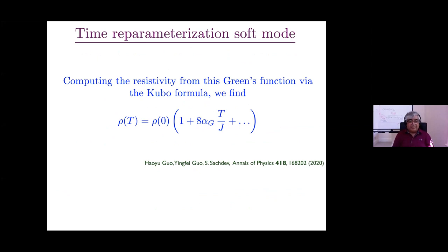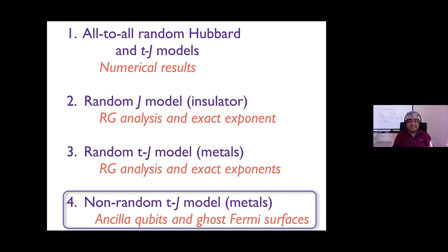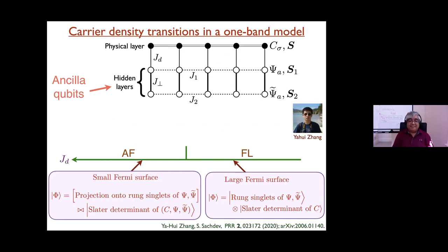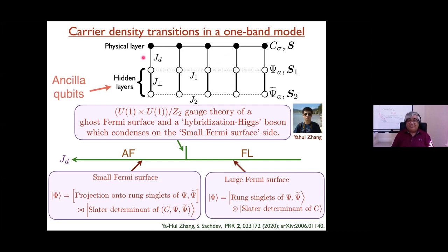I don't have time to talk about the non-random, clean case. I'll refer you to those papers. The main idea is that you take physical electrons and couple them to a bunch of insulating qubits, giving a transition directly between an antiferromagnet metal and a Fermi liquid, with a complicated gauge theory for the critical point.